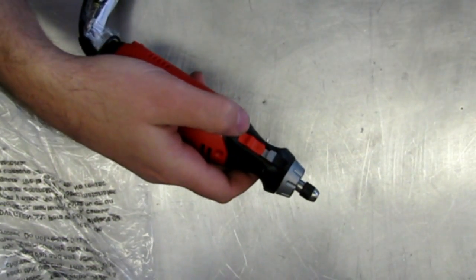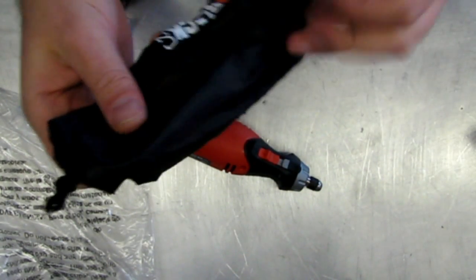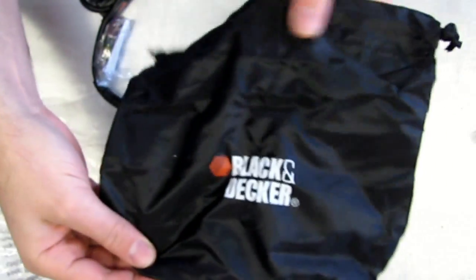Now, let's see if there's anything else in there. Okay, cool. There's another thing in the box here. A little accessory bag. That's pretty slick.